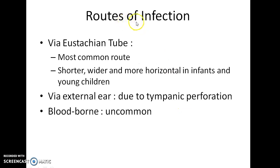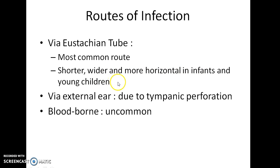What are the routes of infection? Via the eustachian tube — this is the most common route. The eustachian tube is shorter, wider, and more horizontal in infants and younger children, and thus this facilitates the disease. Via the external ear, it can occur due to tympanic perforation. It can also be blood-borne, but this is very uncommon.